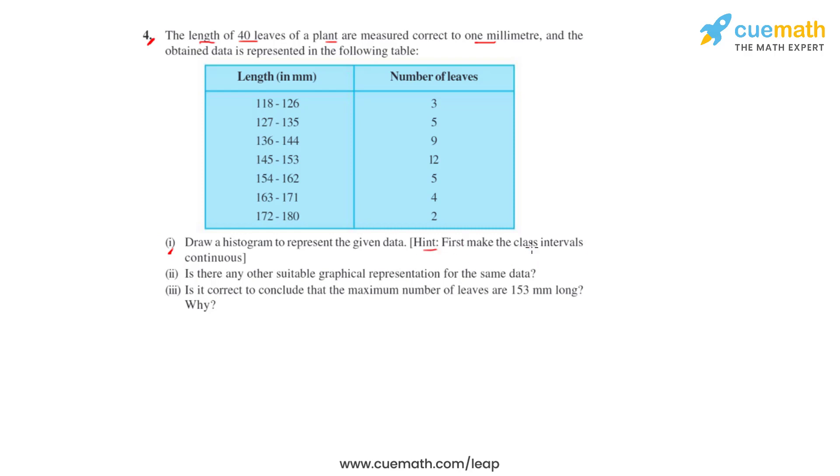Hint is we have to first make the class intervals continuous, as can be seen in this table that the class intervals are not continuous because the upper limit of a class and the lower limit of the succeeding class is not same. Then is there any other suitable graphical representation for the same data apart from histogram, and is it correct to conclude that the maximum number of leaves are 153 millimeter long and why?